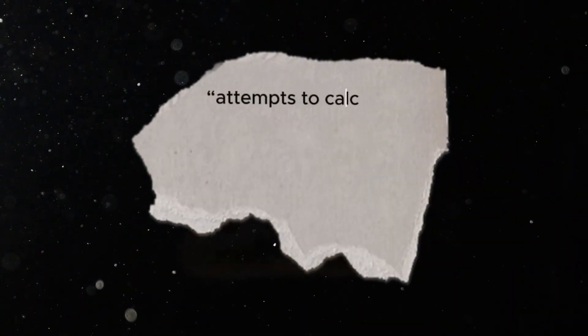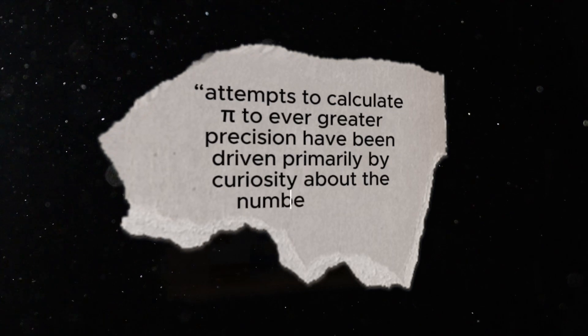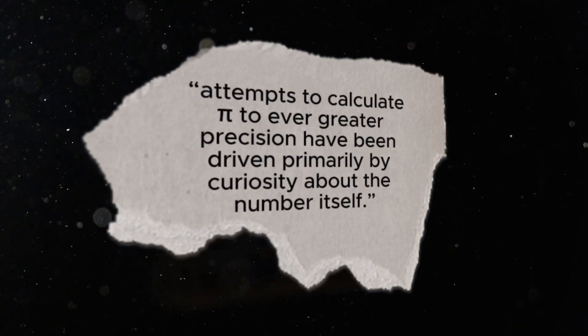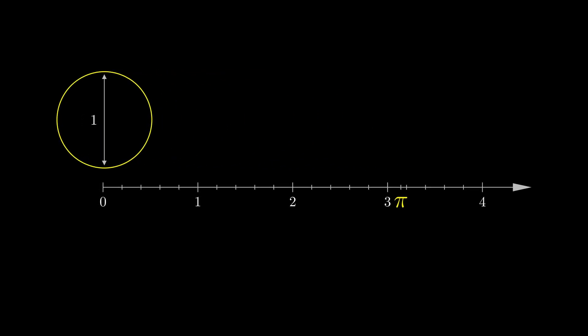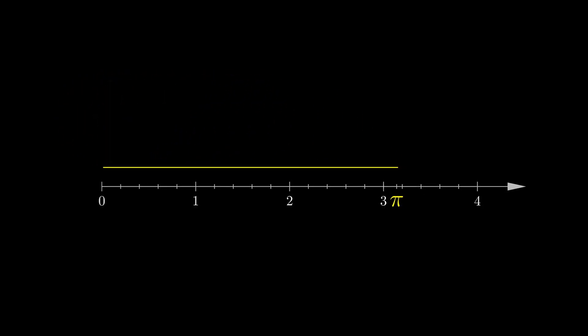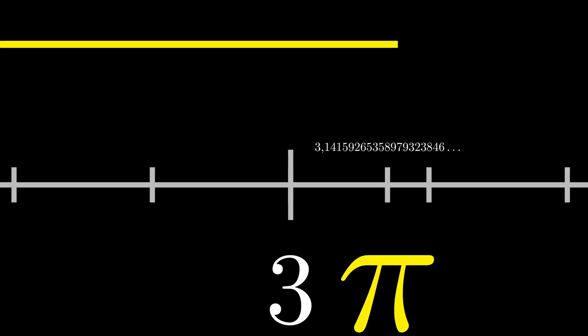The point wasn't practical. Nobody uses billions of digits. It was raw human curiosity and the drive to go further than anyone else. As one history notes, future Pi record-chasing attempts to calculate Pi to ever greater precision have been driven primarily by curiosity about the number itself. And who can blame them? Pi is infinite and patternless. Teasing out its digits is like trying to unspool infinity itself. A tantalizing challenge, would you agree?